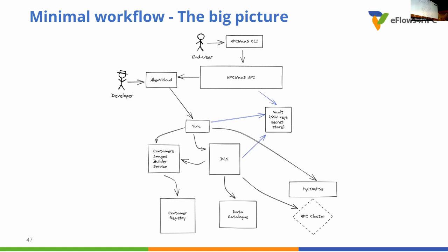York will be responsible to interact with components like the container image creation service. We will use the WEST API that we saw previously with York to automatically trigger some container creations, and manage the location where the containers are created. Then we will interact with the DLS, which is another kind of workflow orchestration engine, and we will trigger some pipelines to get the containers and to put them into the HPC cluster.